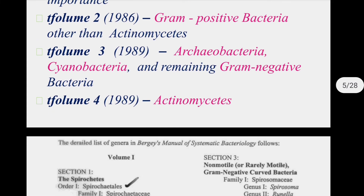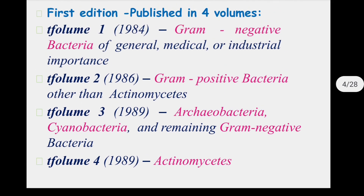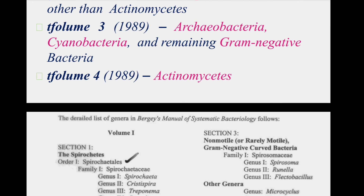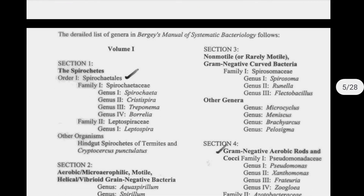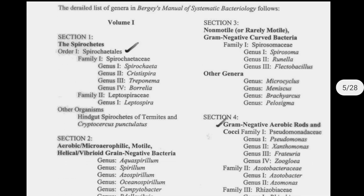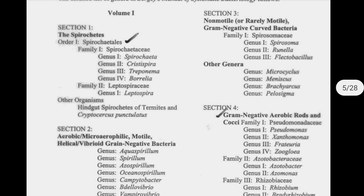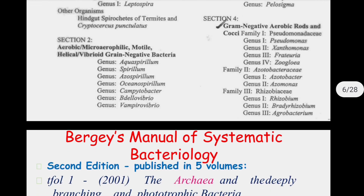Volume four is dedicated to actinomycetes. As mentioned, volume two covers gram-positive bacteria other than actinomycetes, so actinomycetes have their own dedicated volume — volume four. A detailed list of genera in Bergey's Manual of Systematic Bacteriology follows, with volume one consisting of four sections.